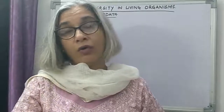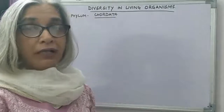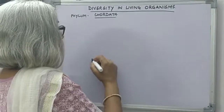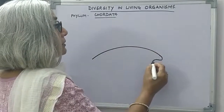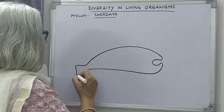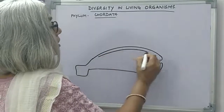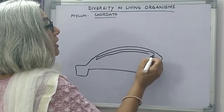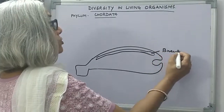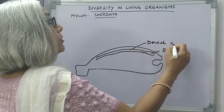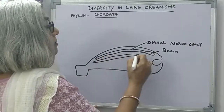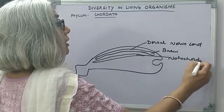These three features will be found in all lower chordates, whereas in higher chordates they may be found in the embryonic stages. Let us see the basic plan of a chordate. Suppose the body is shaped like this — this is the mouth, pharynx, and this is the tail. This is the dorsal, tubular, hollow nerve chord, which in higher vertebrates develops anteriorly into the brain. This is the dorsal nerve chord. Ventral to the nerve chord is the notochord.